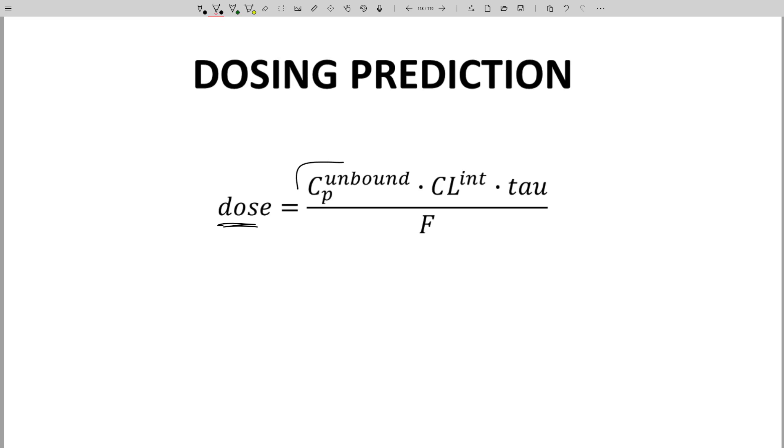CP unbound is the desired concentration at the target. Clint is intrinsic clearance. Tau is the dosing interval. That's a new one. And F is the bioavailability.